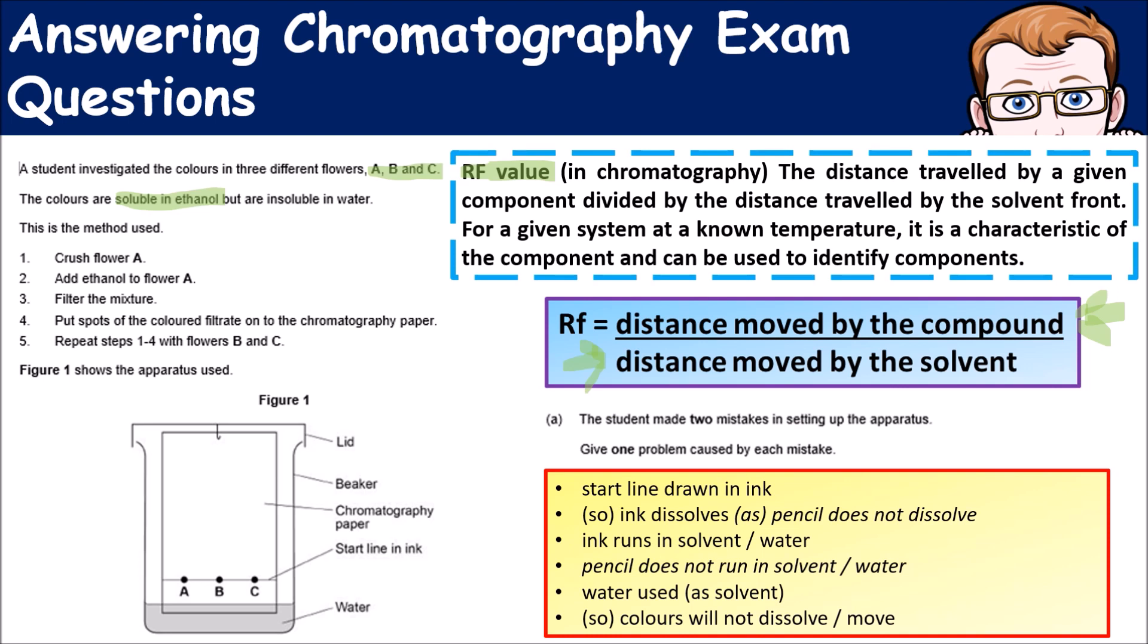This is the method used: crush the flowers, add ethanol to flower A, filter the mixture, put spots of colored filtrate onto the chromatography paper, then repeat steps with B and C.